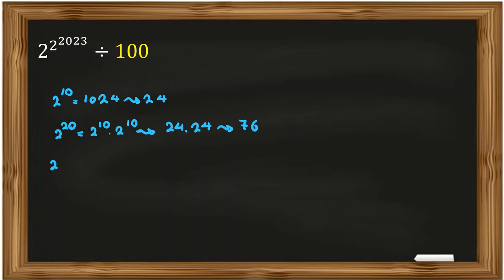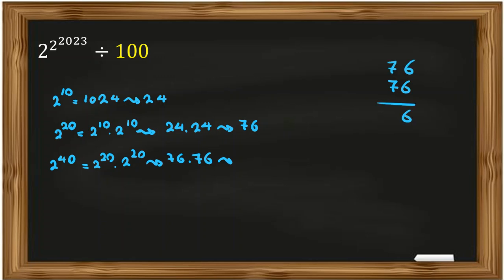Now the next one, 2 to the 40. It is 2 to the 20 times 2 to the 20, so it will be 76 times 76. Let's multiply to find the last two digits: 6 times 6 is 36, carry 3; 6 times 7 is 42 plus 3 is 45, carry 4; 11 times 6 is... it will be 76. So we conclude that 2 to the power of any multiple of 20 always ends in 76, and 76 times 76 is 76.